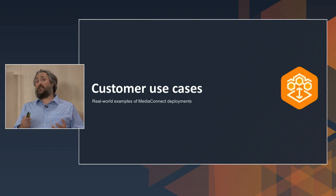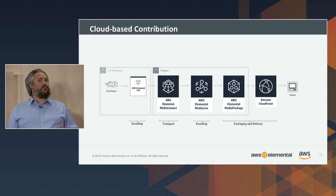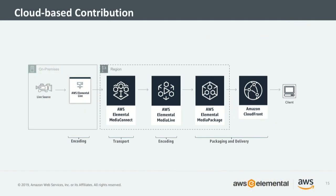Let's look at how some customers are using Media Connect. This is a classic contribution video pipeline — something that AWS Elemental builds every day with our suite of media services. We have a live source feeding a contribution encoder — in this case Elemental Live, but we work with any TS-based contribution encoder. The signal goes into Media Connect, then into MediaLive, into MediaPackage, through CloudFront, and out to your player — a full end-to-end digital live channel using Media Connect to securely and reliably ingest content over a Direct Connect connection or a public internet contribution configuration.